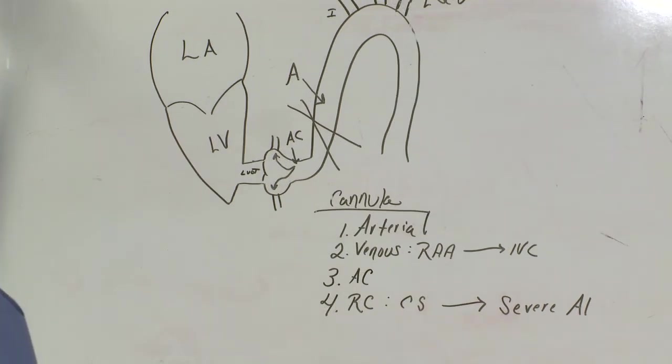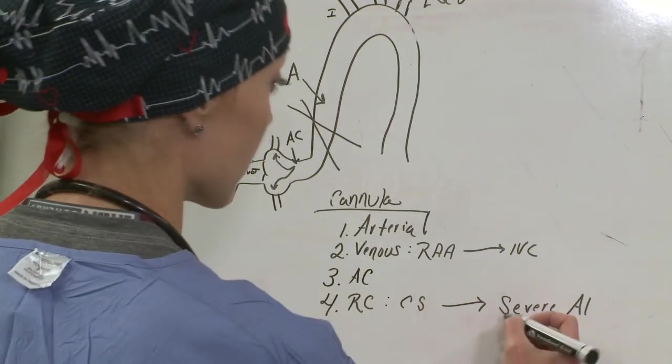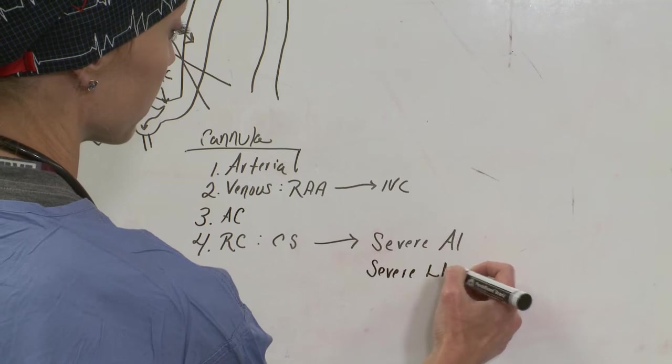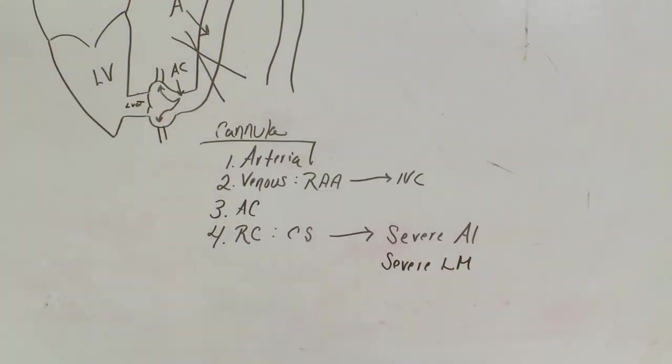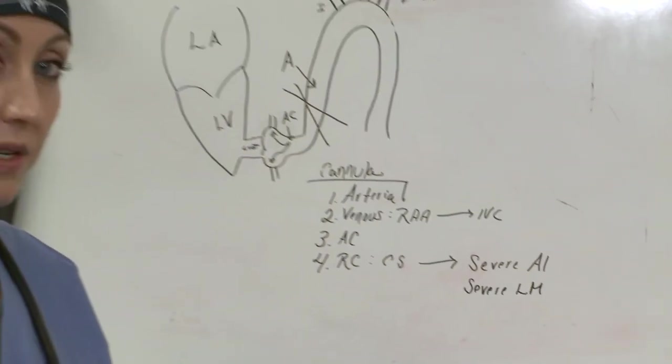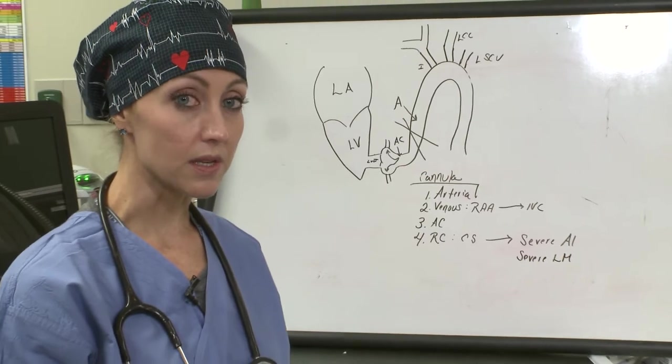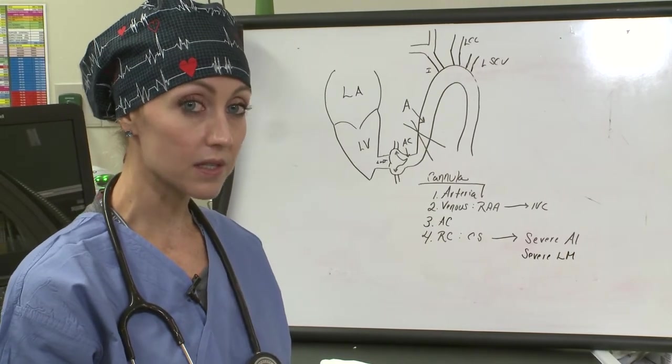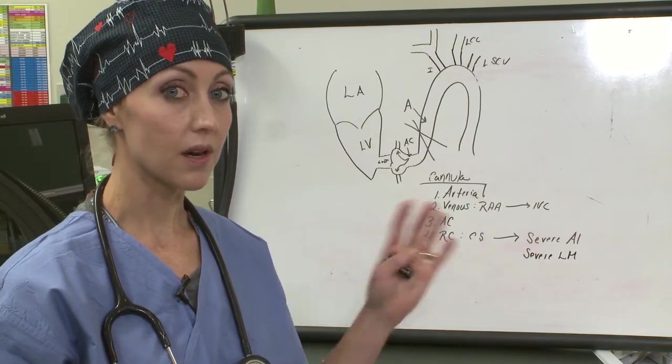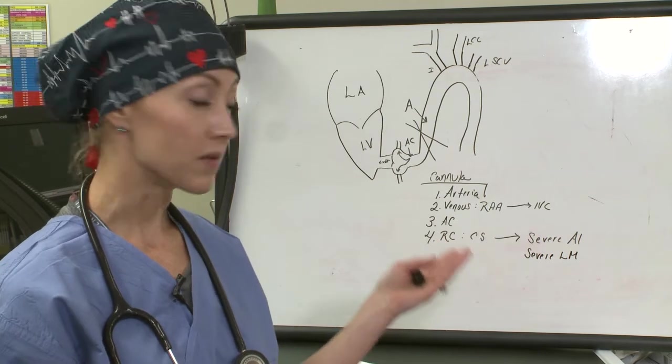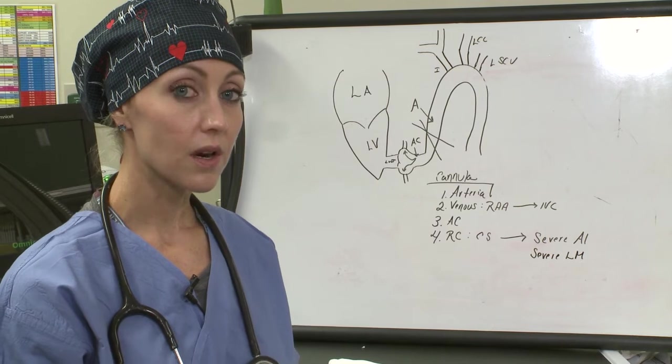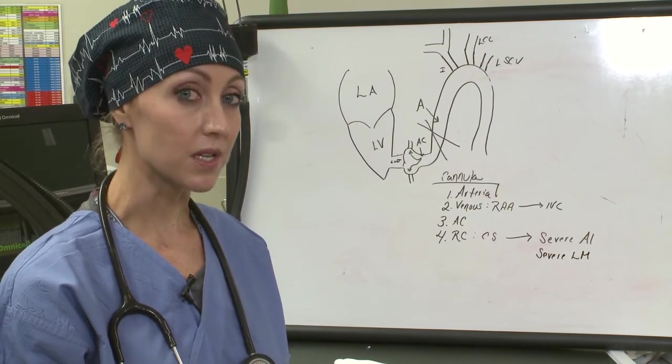The next reason that you might need retrograde cardioplegia is if you have severe left main disease. And we're going to talk about coronary anatomy in just a little bit, but if you have severe left main disease, when you would run antegrade cardioplegia, the left main splits into the LAD and the circumflex, you would not protect the heart that way. Your cardioplegia would not protect the entire anterior and lateral surface of the heart. So if you have severe left main disease, a lot of times you would need to place a retrograde cardioplegia so that you could get your cardioplegia in that way.